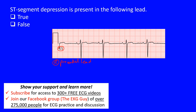First, you have to know what is the ST segment. Let's take a look at and draw out a normal complex. This is a P wave, this is our QRS complex, and this is our T wave. More specifically, this is an R wave, and this is an S wave.